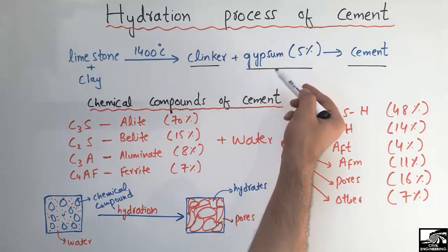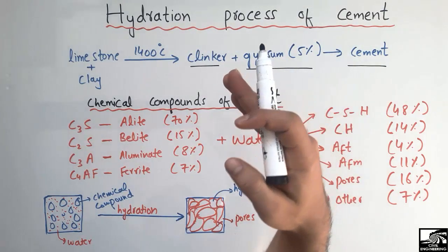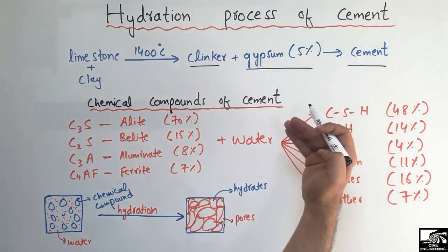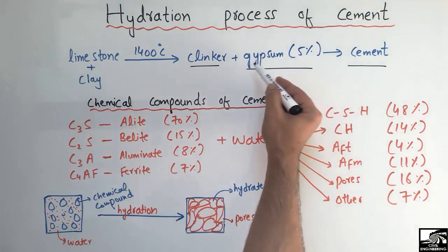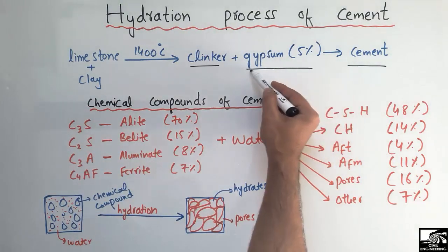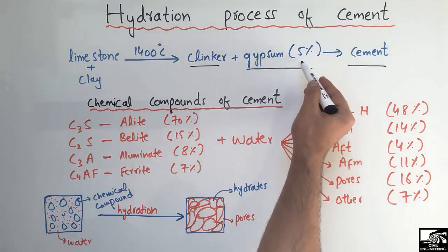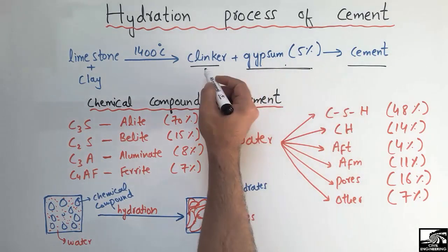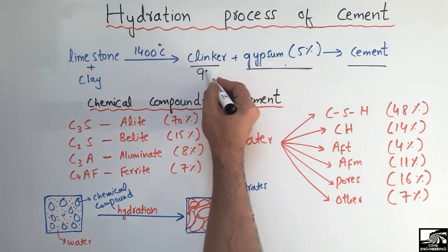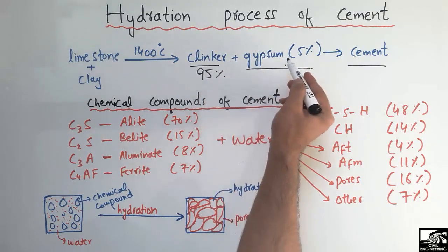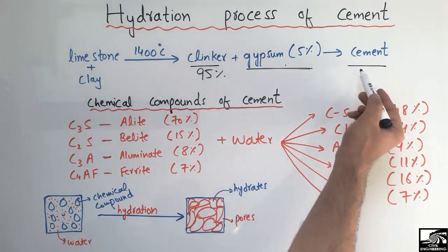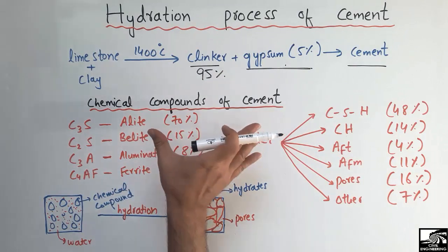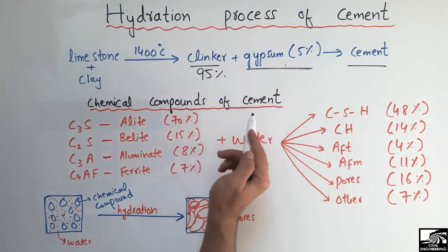The addition of gypsum is to control the setting time of cement. The more gypsum you add, the more the setting time is delayed. Mostly it is taken as five percent of the weight of the cement — so five percent gypsum and 95 percent clinker are combined to form cement.